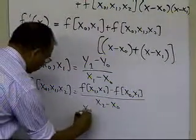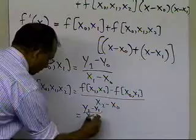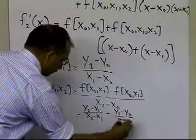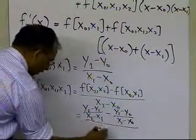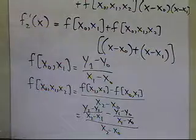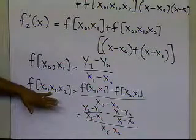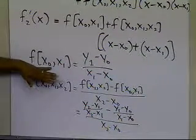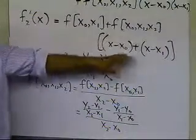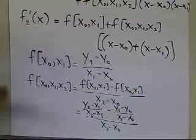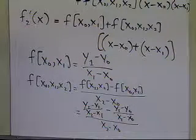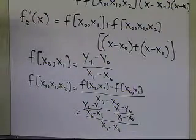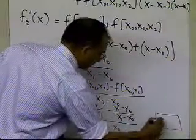Explicitly, f[x0, x1, x2] becomes: [(y2 minus y1) divided by (x2 minus x1)] minus [(y1 minus y0) divided by (x1 minus x0)], all divided by (x2 minus x0). That's how each divided difference is calculated from the three given data points. Substitute these values into the derivative formula to calculate the derivative of the function at any x between the lowest and highest given values. That's the end of this segment.